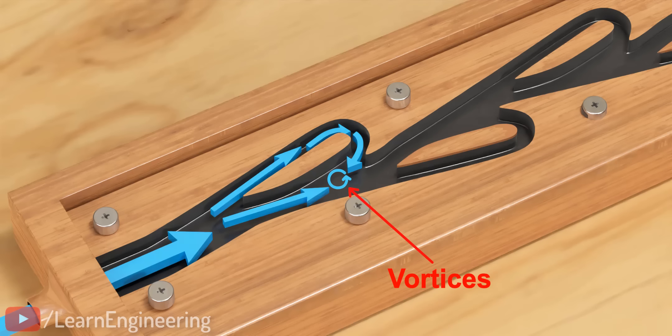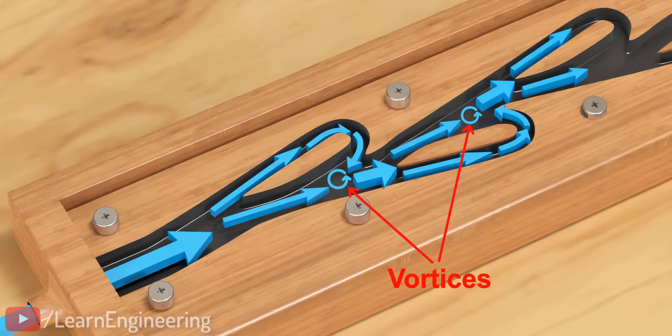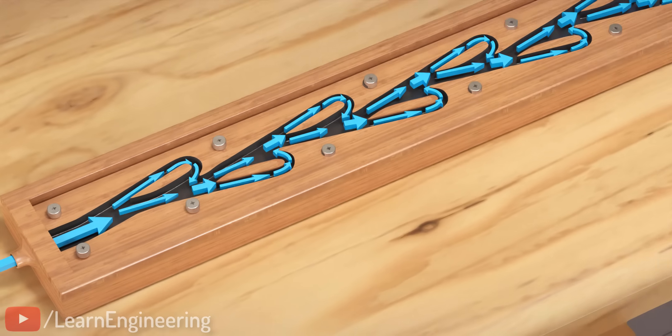In short, when the flow goes from left to right, it undergoes a huge amount of obstruction. This process of sudden expansion, deflection, reversal, and mixing will take place at every unit. By adding many such units, the resistance can be further increased.